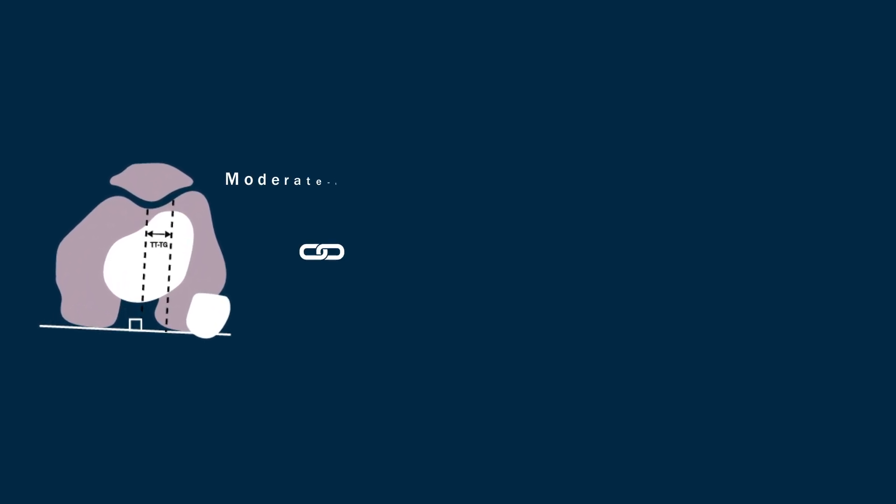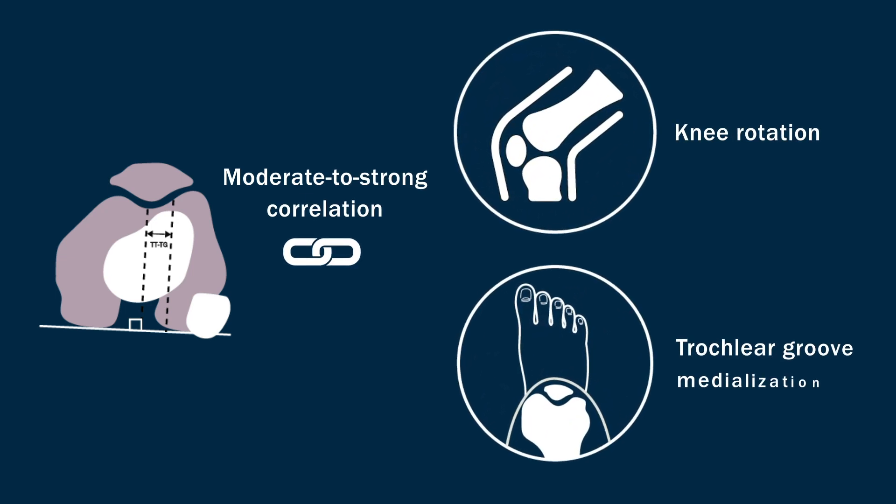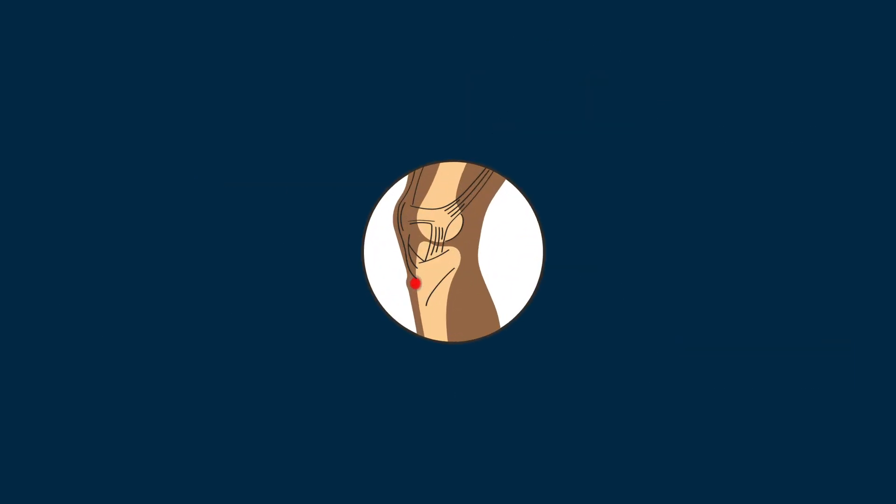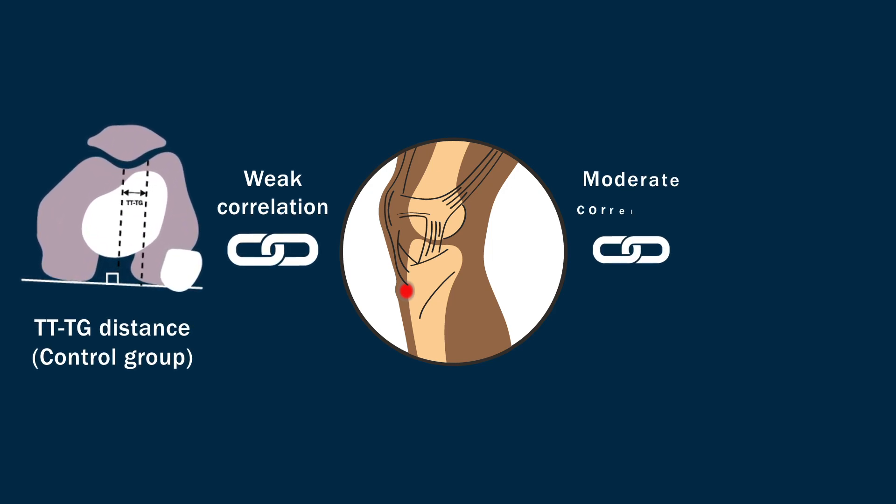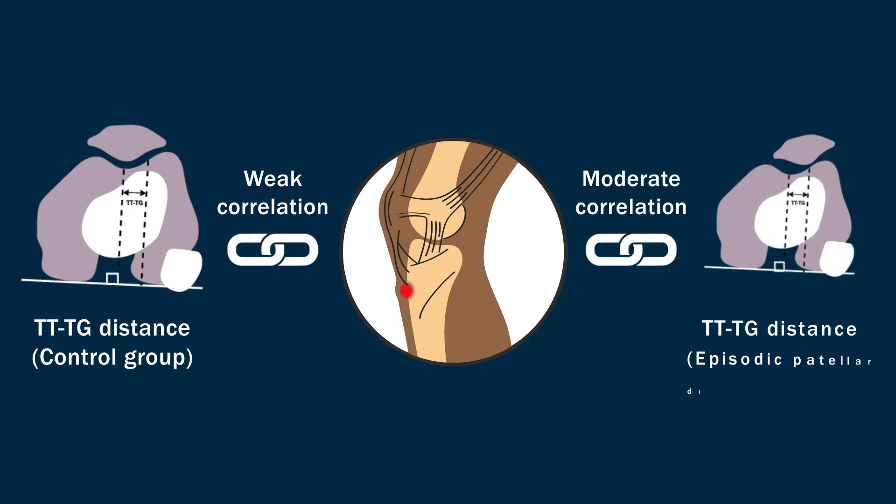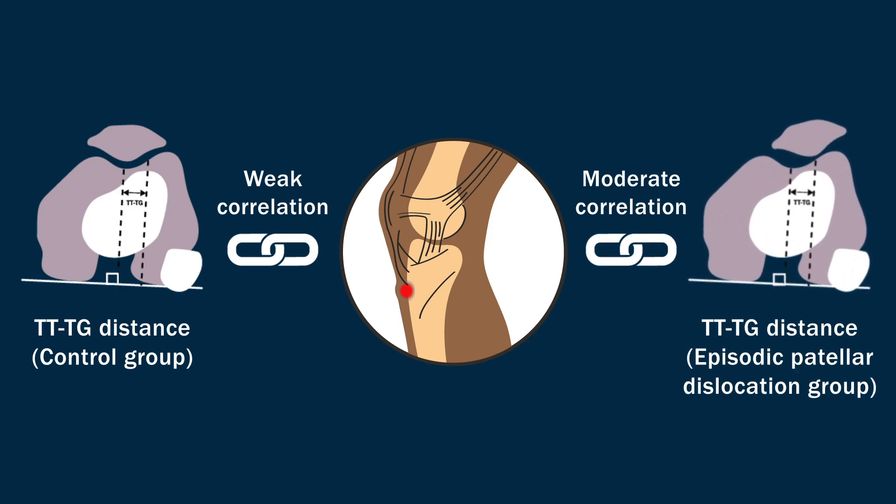The TTTG distance was moderately to strongly correlated with knee rotation and trochlear groove medialization in both groups. However, tibial tubercle lateralization was weakly correlated with the TTTG distance in the control group and was only moderately correlated in the episodic patellar dislocation group.